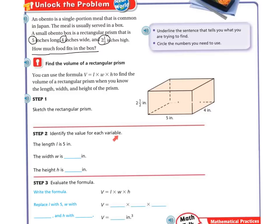And they've got the height, the width, and the length right there. So then you're going to identify the value for each variable. So our length is 5 inches. We already know that. And our width is 4 inches. Right there's our width. We already have our length. And then our height is 2 1/2 inches. So there's my height.